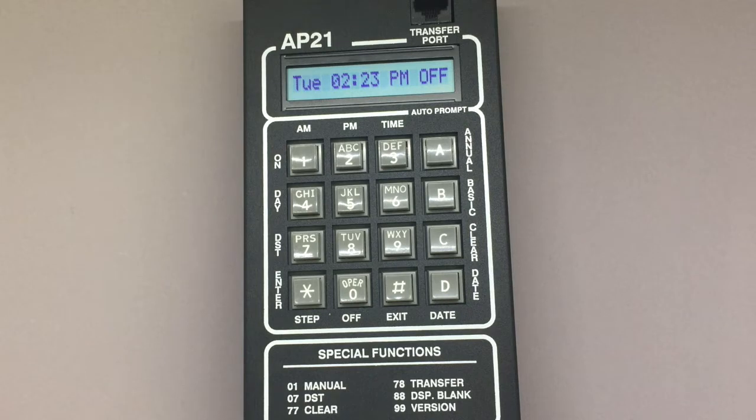On the AP21 you can program what RTC calls basic steps, which are scheduled times the AP21 stores in which the time switch automatically turns the flasher relay on or off. Each scheduled programming instance of on or off is referred to as a step.